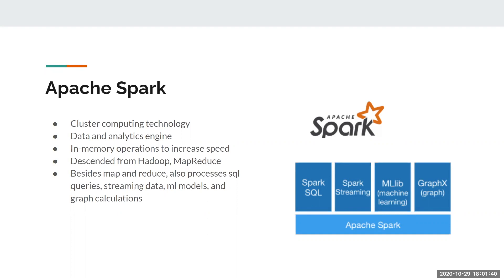Spark processes intermediate operations without writing their results back to the disk, which increases the total speed of your processing. It's descended from Hadoop and MapReduce, which are algorithms or data processing tools. As long as you can reduce your process to a Map step and a Reduce step, you can contract that work out to other systems for distributed computing. Spark also processes SQL queries on data stored in RDDs or data frames.